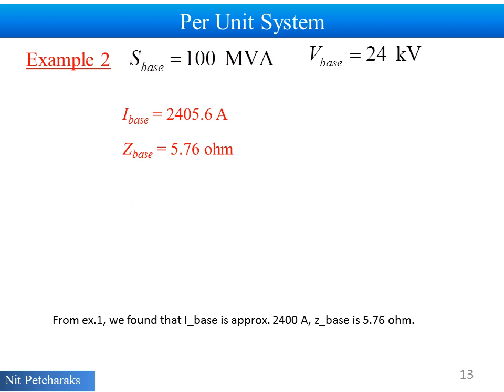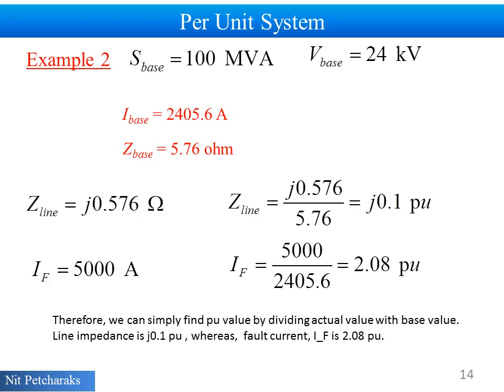From example 1, we found that base current is approximately 2400 amperes. Base impedance is 5.76 ohm. Therefore, we can simplify per unit value by dividing actual value with base value. Like impedance is J0.1 per unit. Whereas, fault current IF is 2.08 per unit.